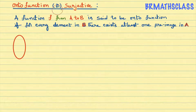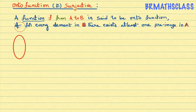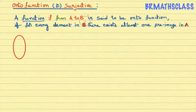Onto function is also known as surjective function. What is the definition of onto function? A function f from A to B — first of all, it must be a function. If it is not a function, there is no question of onto function. We already know domain, codomain, image, and preimage. I am going to use these words. If you don't know them, please watch the second class in the functions chapter.